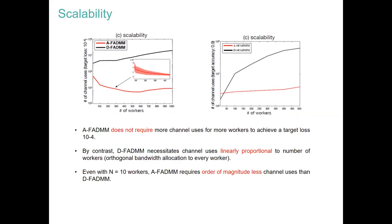Finally, for scalability, we look at the number of channels required to achieve a given target loss for both linear regression and image classification. You can see that for analog FL, the number of channels required does not scale with the number of workers as in the digital case — digital requires many more channels to guarantee the target loss, unlike the analog case.